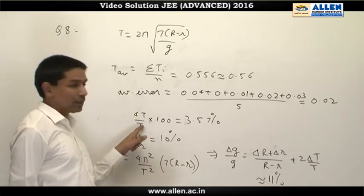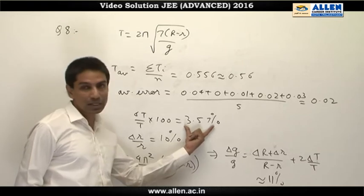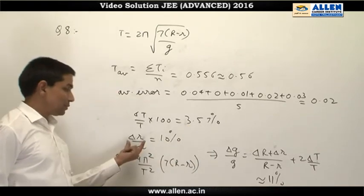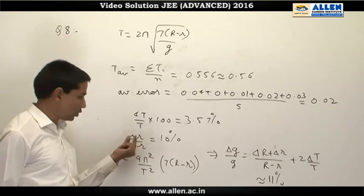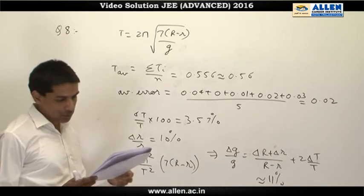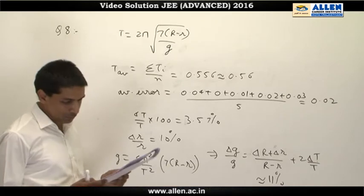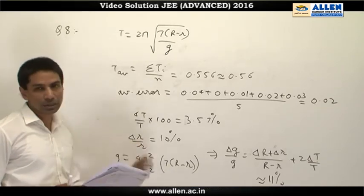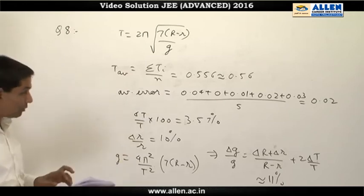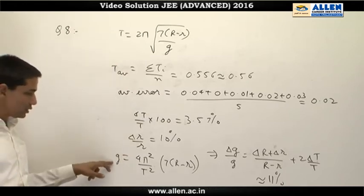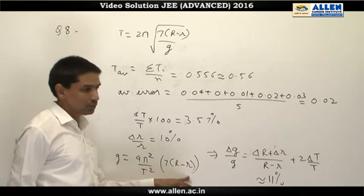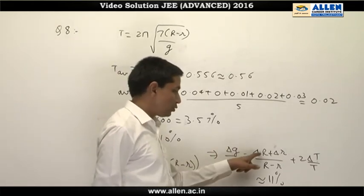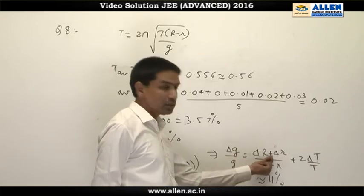The average error comes out to be 0.02 seconds. That means delta T upon T, the percentage error is 3.57%. The percentage error in radius small r comes out to be 10% because delta r value is given to be 1 to 1 by 10. Manipulating this formula, we get g equals 4π² by T² into (7 capital R minus small r).